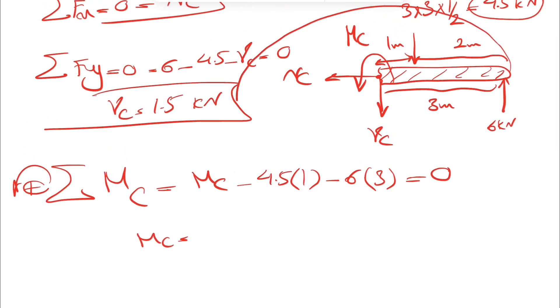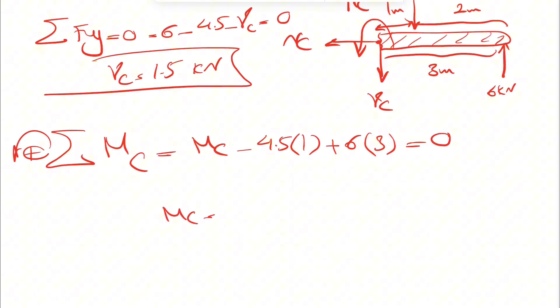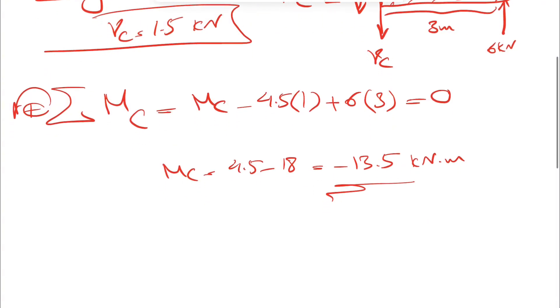Sorry, the moment of 6 kilonewtons is in this direction, so it's counterclockwise. This is actually positive. So MC would be actually 4.5 minus 18, which is going to be minus 13.5 kilonewtons meter, and the negative sign shows that our assumption was not correct. And the moment is actually clockwise.